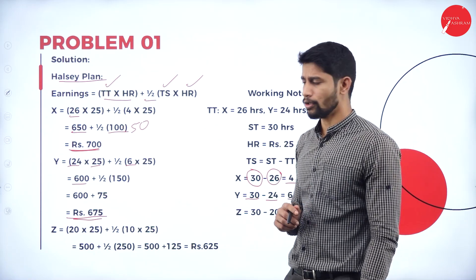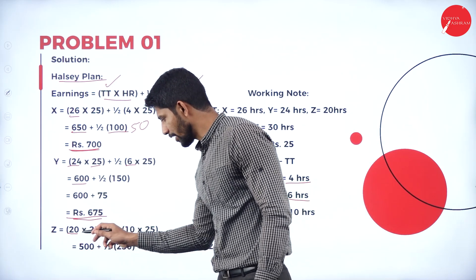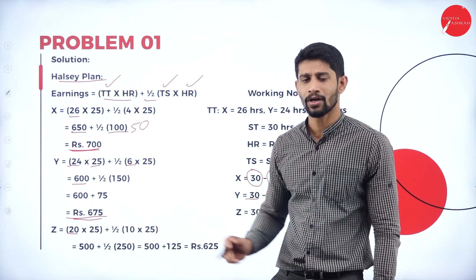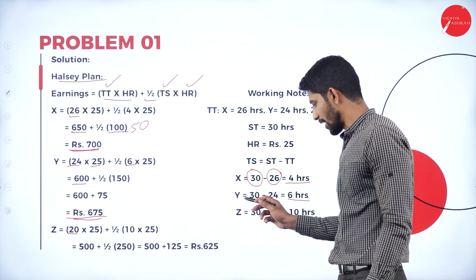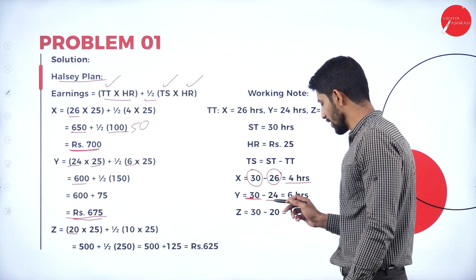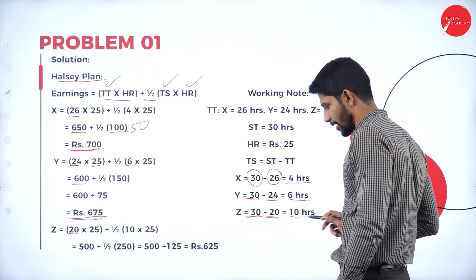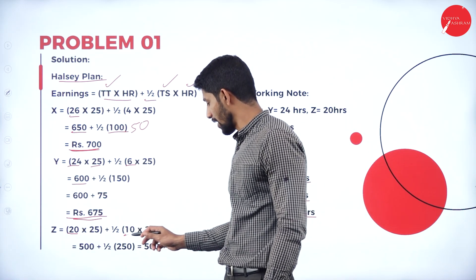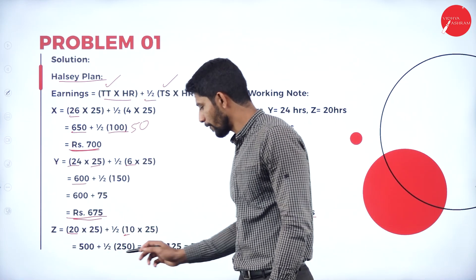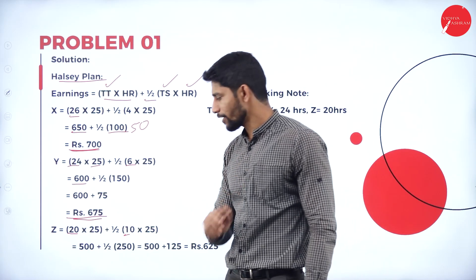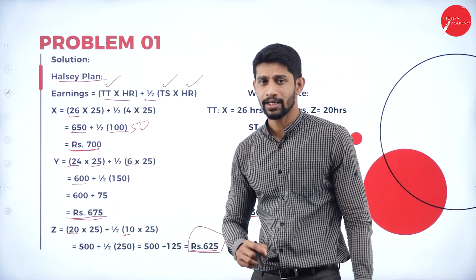For Mr. Z: 20 hours × 25 rupees per hour, plus half of time saved. Standard time is 30 hours, he took 20 hours, so he saved 10 hours. Time saved 10 hours × 25 per hour = 250. So 500 plus half of 250 is 125. So 125 plus 500 equals 625 rupees. So 625 is the earning of Mr. Z under Halsey plan.